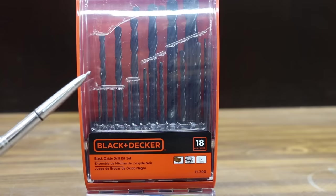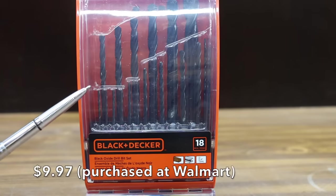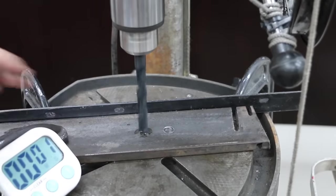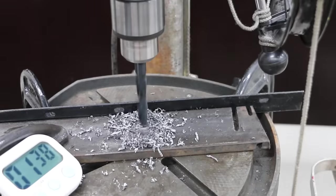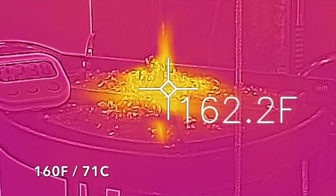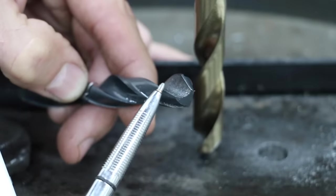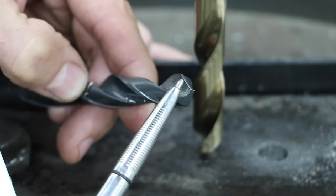The least expensive brand we'll be testing include these Black & Decker Black Oxide drill bits. 18 pieces for only $9.97. The temperature is about 160 degrees Fahrenheit. No damage to the Black & Decker bit. It actually looks fairly good. Very small amount of wear on the leading edge.